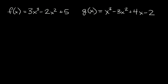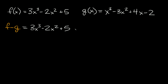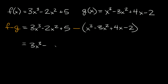Here's the next one. We have f of x equal to 3x cubed minus 2x squared plus 5, and g of x equal to x cubed minus 3x squared plus 4x minus 2. In this case we're going to subtract. So f minus g is equal to — f is 3x cubed minus 2x squared plus 5, and then we subtract g of x, which is the whole thing in parentheses: x cubed minus 3x squared plus 4x minus 2. Distributing the negative gives us minus x cubed plus 3x squared minus 4x plus 2.